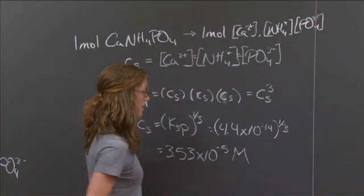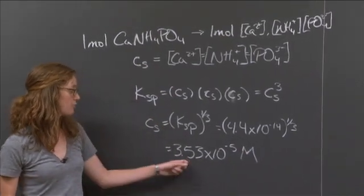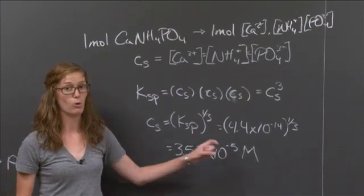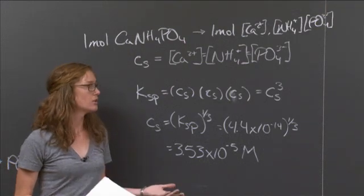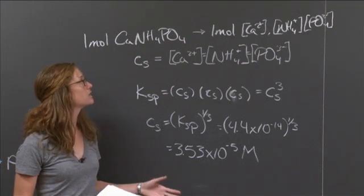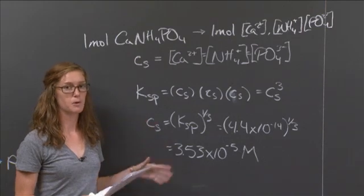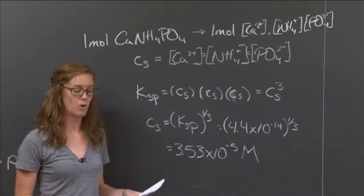And we get that the solubility of calcium ammonium phosphate is 3.53 times 10 to the negative 5 molar. So that means 3.53 times 10 to the negative 5 moles per liter of water. That's not very much. So we can say, generally, or relatively, this calcium ammonium phosphate is not that soluble in water.